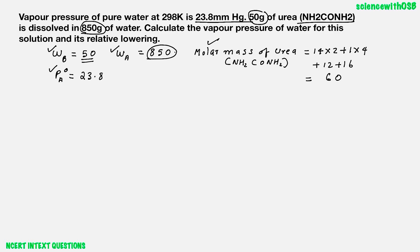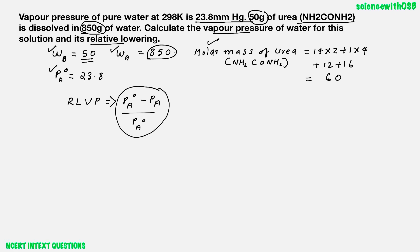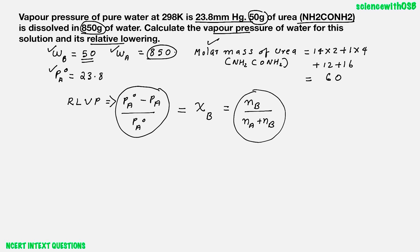What we have to find: vapour pressure of the solution and relative lowering of vapour pressure. What is relative lowering of vapour pressure? The equation is (Pa standard minus Pa) by Pa standard. This is relative lowering of vapour pressure, and it is equal to the mole fraction of the solute. Mole fraction of solute is NB by (NA plus NB).